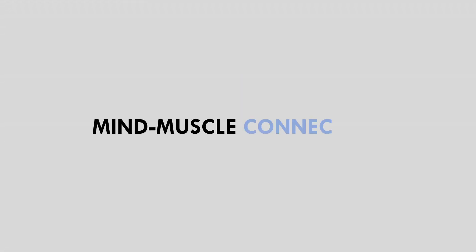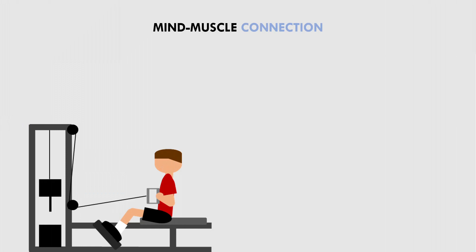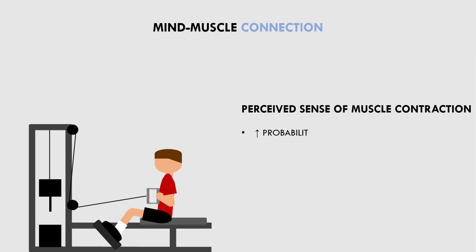The next indicator that the exercise is providing a good hypertrophic stimulus is the mind-muscle connection. This refers to the perceived sense of contraction of the target muscle group — in other words, how much do we feel the muscle contracting during the exercise itself? If we feel a strong sense of muscle contraction in the muscle we are trying to train, then it is more likely that we are providing a good hypertrophic stimulus.